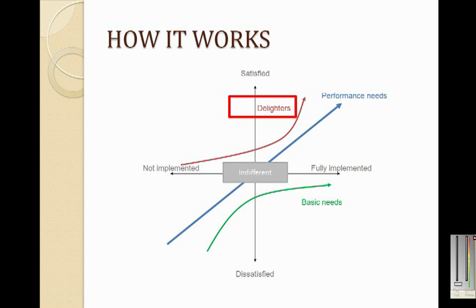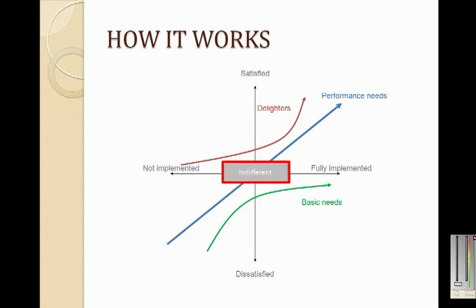The delighter curve represents the features which will improve the user experience. The more you add these features into the product, the better the user feels about it. However, if these features are not included, it will not affect the user experience. The gray area represents the features for which the end user feels neutral.